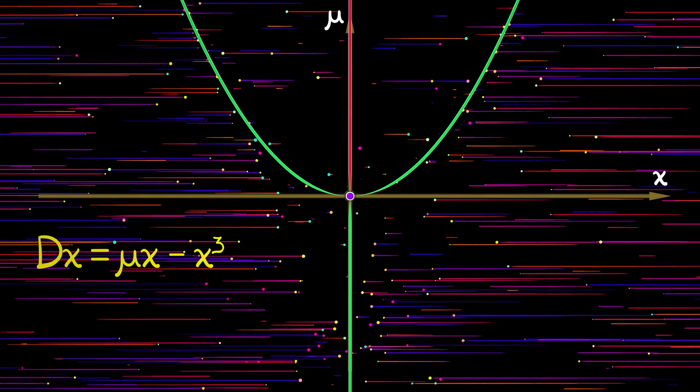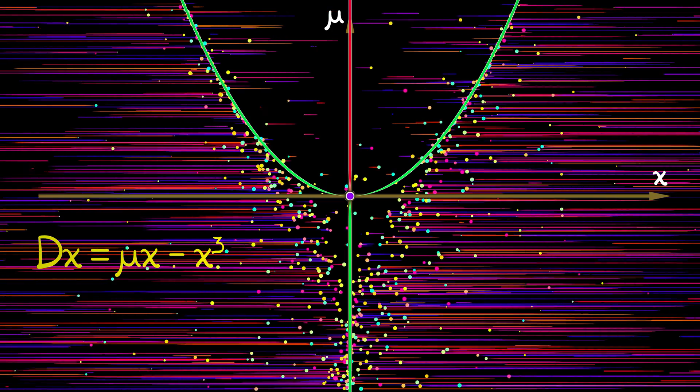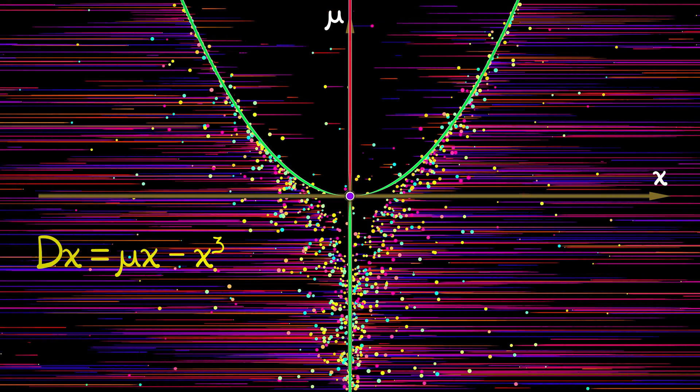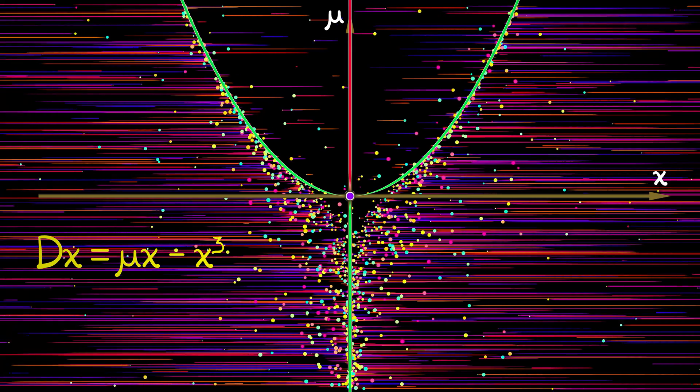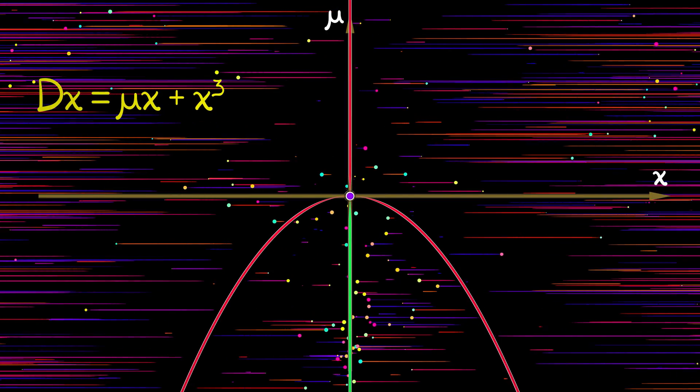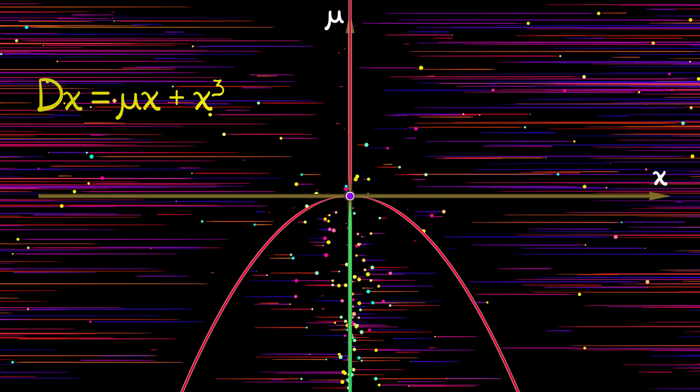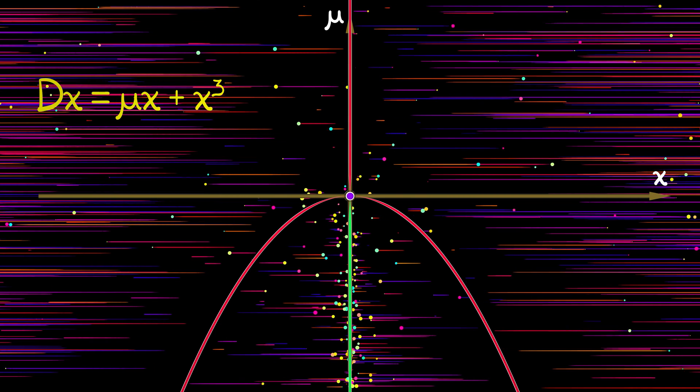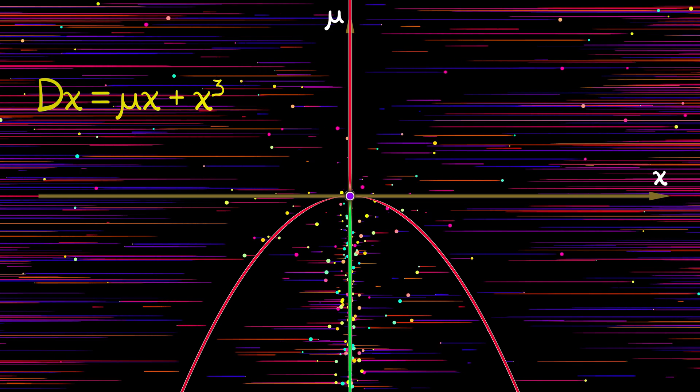If we look at a pitchfork and we change that constant c from negative one to positive one, look at what is happening dynamically. Then everything is flipped upside down and the stabilities are reversed. Reversing those stabilities makes a huge difference.